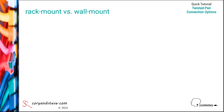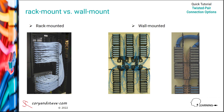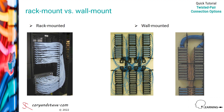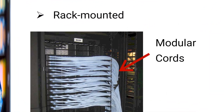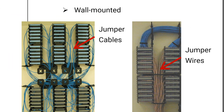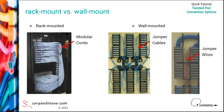We'll finish things off with a look at the mounting options for connectors at termination points. Connectors of all types can be rack mounted or wall mounted in telecom rooms, equipment rooms, or data center computer rooms. Rack mounting patch panels with modular cords is a common practice, but wall mounting with jumpers or patch cords can also be considered if space is at a premium or costs need to be minimized.